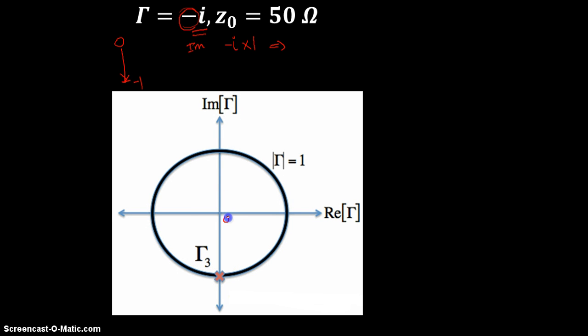So if this is your 0, this is your negative 1 value and your reflection coefficient falls at the negative side. So this is positive imaginary part and positive real part. This is negative imaginary part and positive real part.